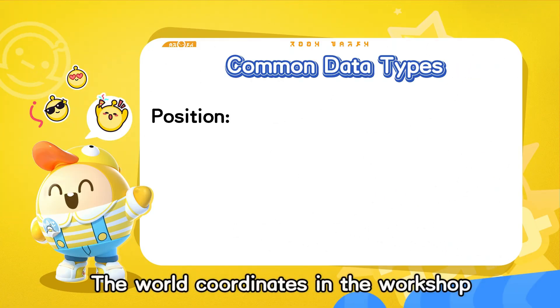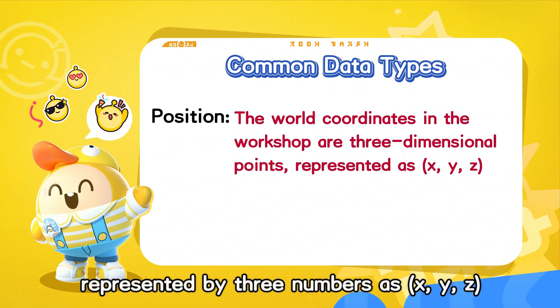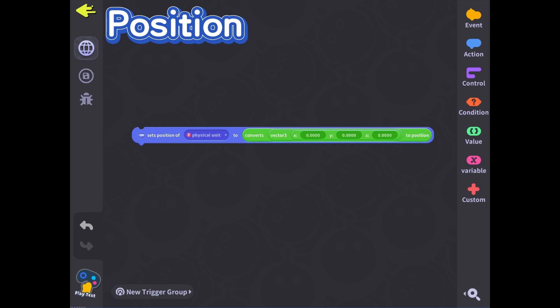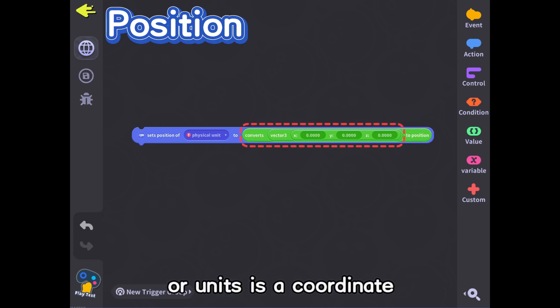Position: The world coordinates in the workshop are three-dimensional points, represented by three numbers as x, y, z. In games, the specific location of characters or units is a coordinate.